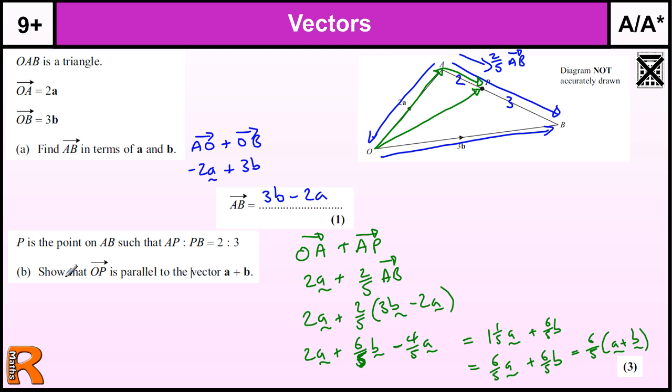And I haven't actually finished. I need to show that OP is parallel to the vector a plus b. So that's what I've done here with the 6 fifths of b. To show something that's parallel, you need to show that it is a multiple of that vector. So something times a plus b. If a vector is parallel to something, it's a multiple of that. So it could be a half, or 2 times, or 3 times, or in this case, 6 fifths times.